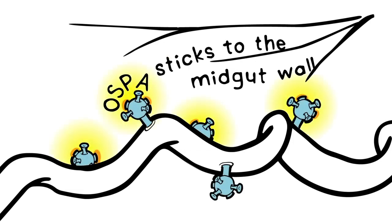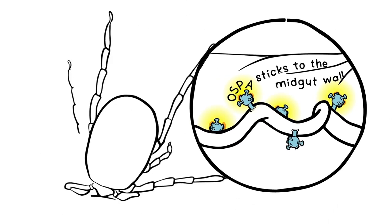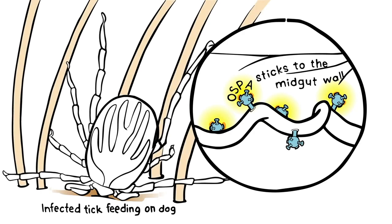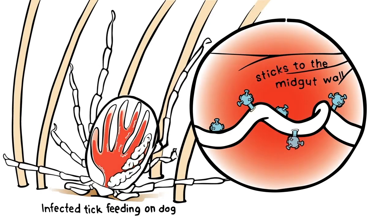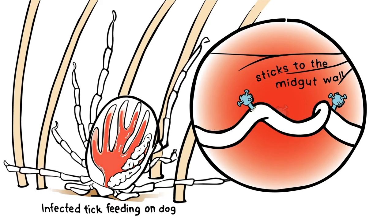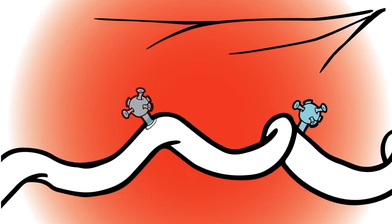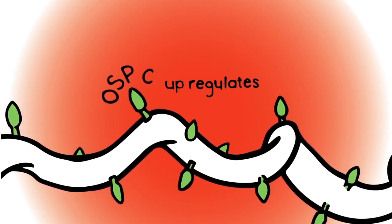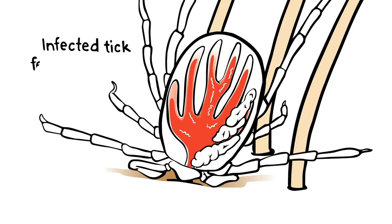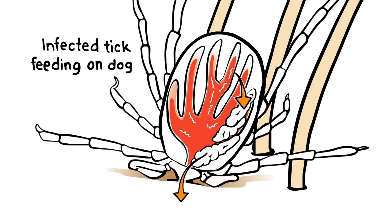However, once the tick starts feeding, the time the bacteria remain in the gut is limited. As soon as the warm blood enters the tick's gut, the bacteria respond with a change in outer surface proteins. As OSP-A downregulates, the bacteria release from the tick's gut. The bacteria then upregulate OSP-C, which allows them to move to the tick's salivary gland and ultimately into the dog.